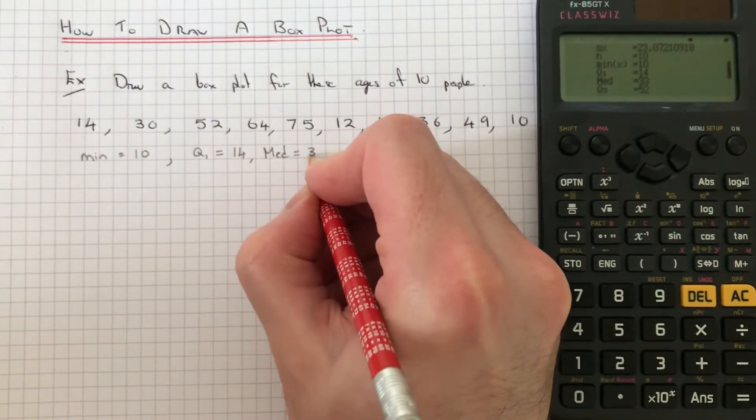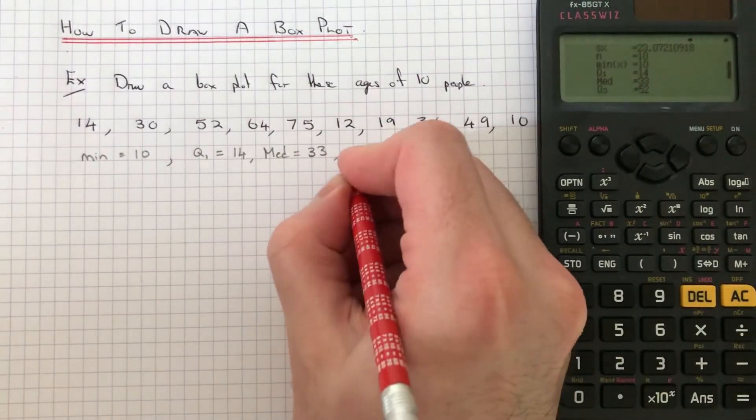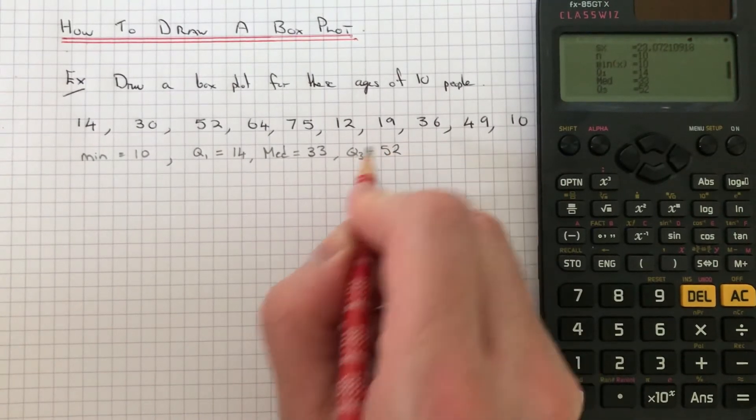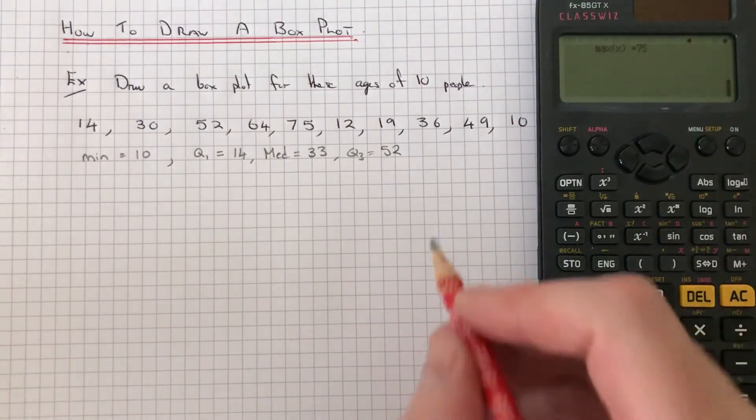And then at the bottom is Q3, which is 52. And then we just need the highest data value, which is 75.